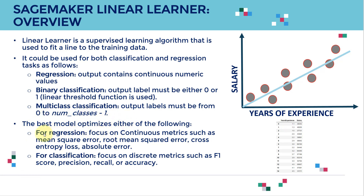For regression specifically, we can train the algorithm to focus on continuous metrics such as mean square error, root mean square error, cross entropy loss, and absolute error. For classification, the algorithm can optimize precision, recall, accuracy, and F1 score. We're going to cover all these metrics in future case studies.